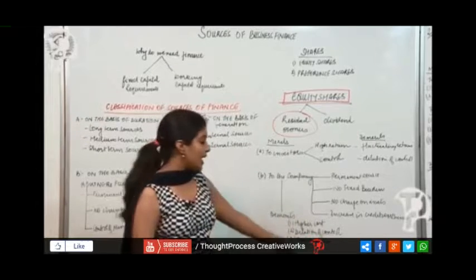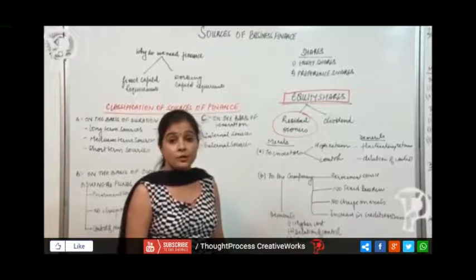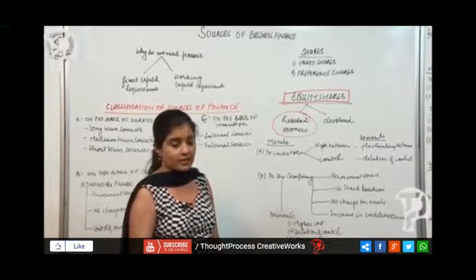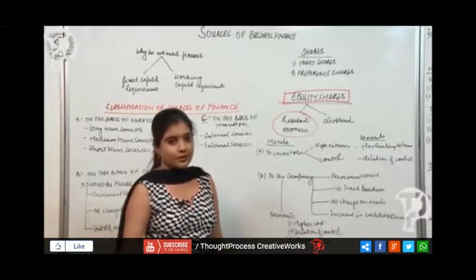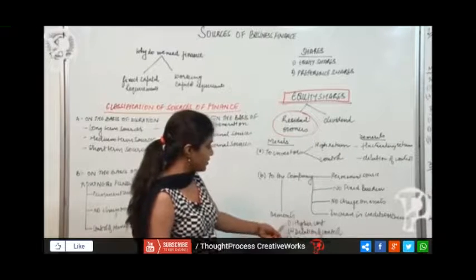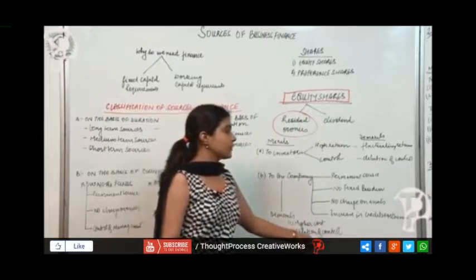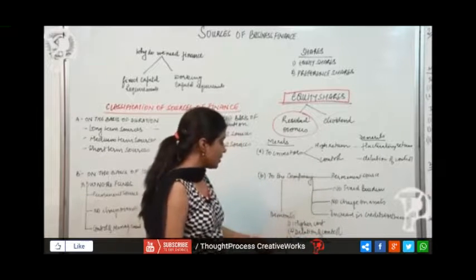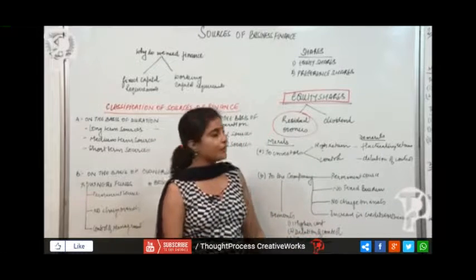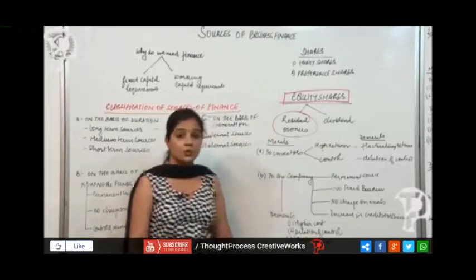Then what are the demerits? Higher cost. The cost of issue of shares - you have to issue prospectus and there are so many other legal formalities which have to be complied with. So the cost of issue of equity shares is pretty high. Dilution of control I have already explained to you. That is a disadvantage for the company also, and more number of formalities. So this was all about equity shares.